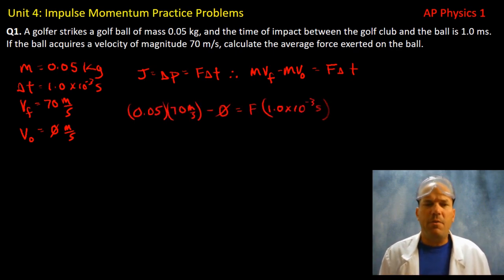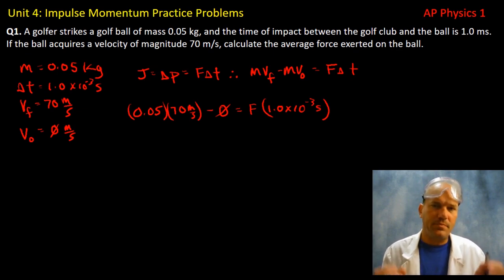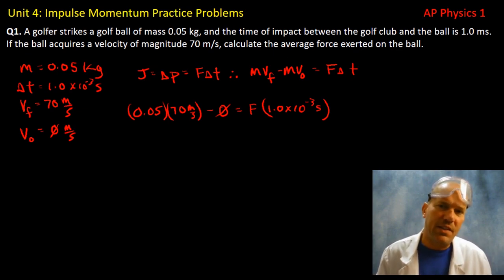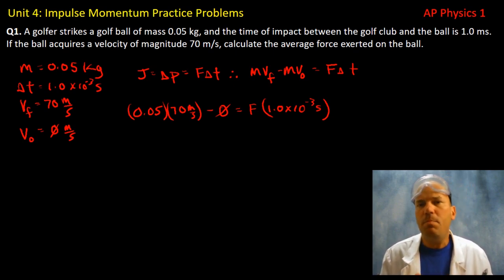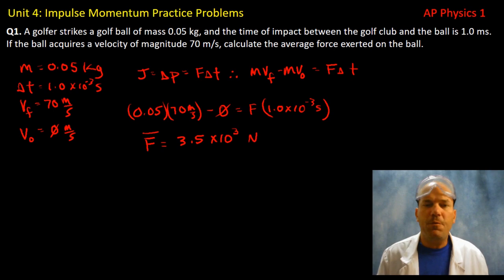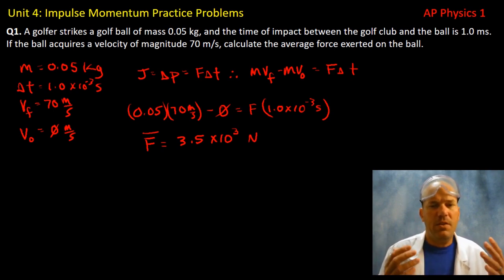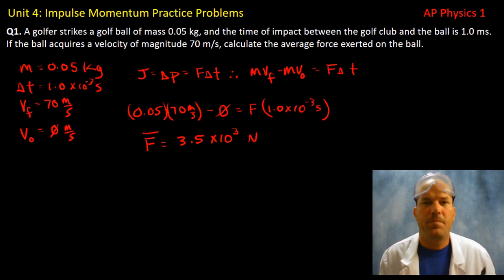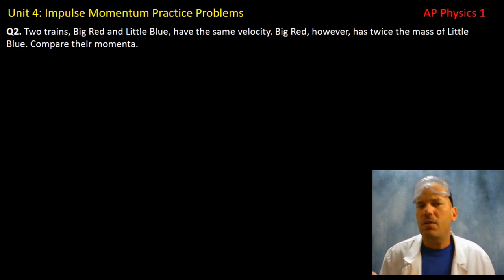Taking our information and plugging it in, and acknowledging that the initial velocity of the ball was zero and therefore the initial momentum was zero, we can rearrange algebraically and find the average force to be 3.5 × 10³ newtons.